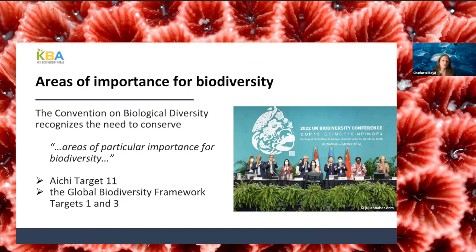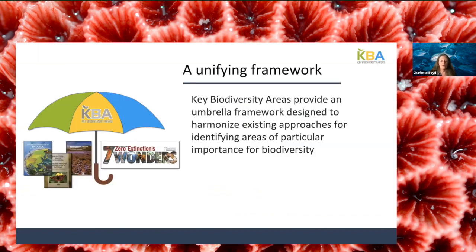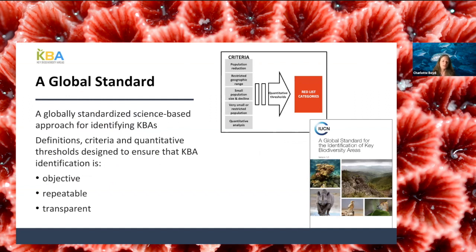There is now broad global support for safeguarding sites in terrestrial, freshwater, and marine systems. But site protection is most efficient if we know which areas contribute significantly to the global persistence of biodiversity. The CBD specifically recognizes the need to conserve areas of particular importance for biodiversity, both in the Aichi targets and most recently in the global biodiversity framework. BirdLife International's success at identifying important sites for birds as IBAs led to similar approaches by other taxonomic groups, but overlapping sites with different criteria present real challenges for conservation planners. The KBA standard was developed to harmonize these approaches and was formally adopted by IUCN at the World Conservation Congress in 2016.